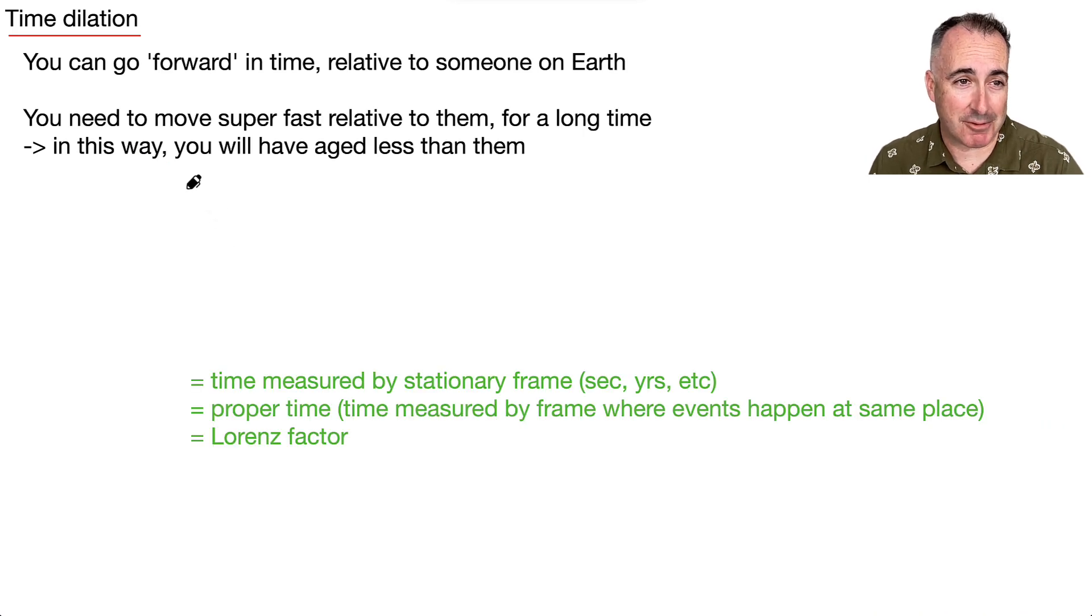So let's look at this equation. It has to do with time travel. First of all, we call it time dilation. And in this sense, you can go forward in time only relative to someone else who didn't move. So that's why it's relative, right? That's why we always call it relativity. So now how does that actually work?